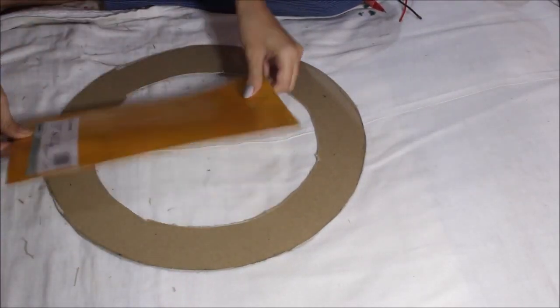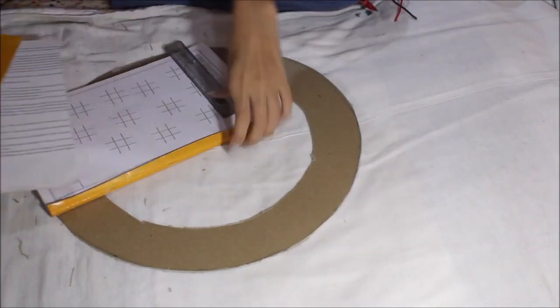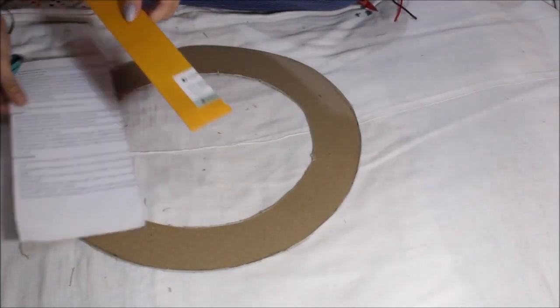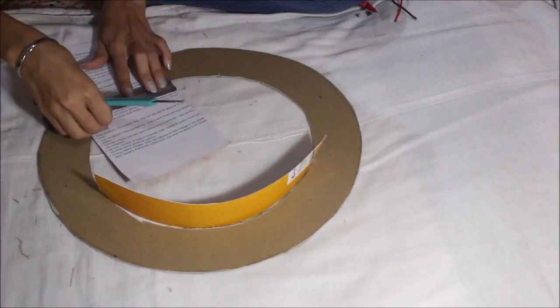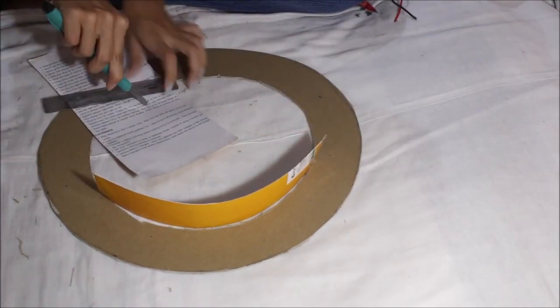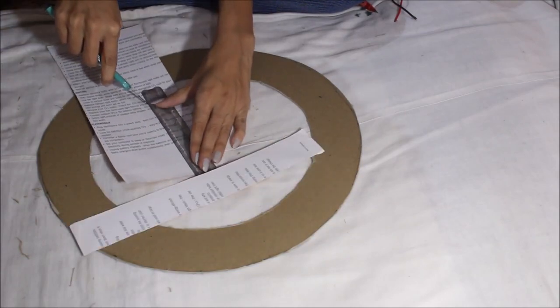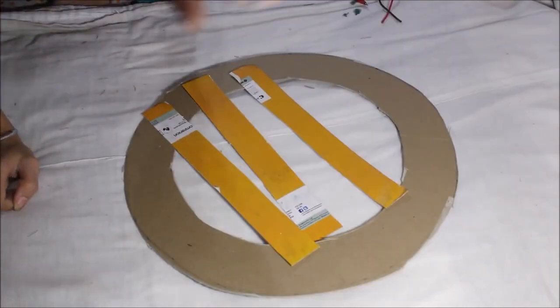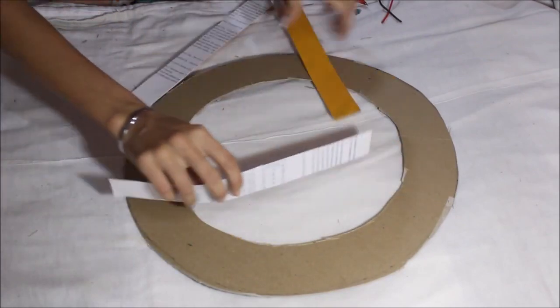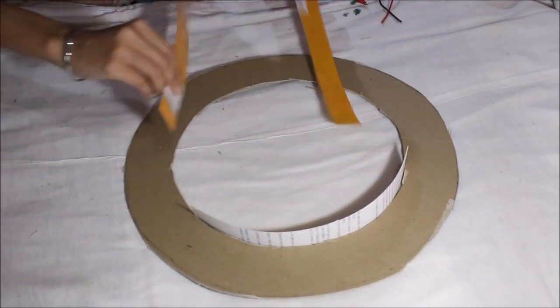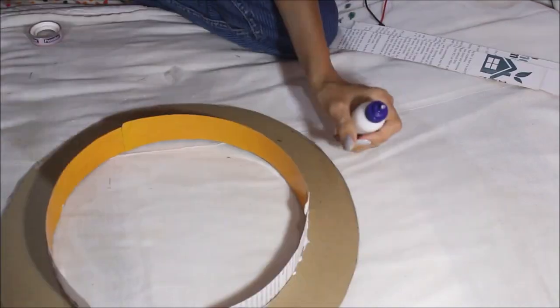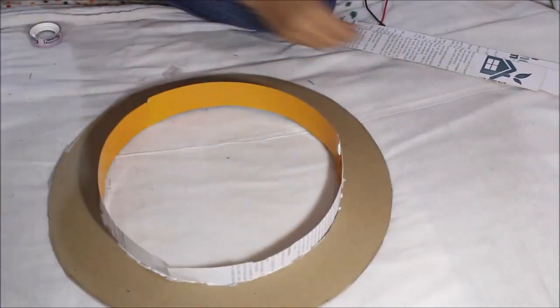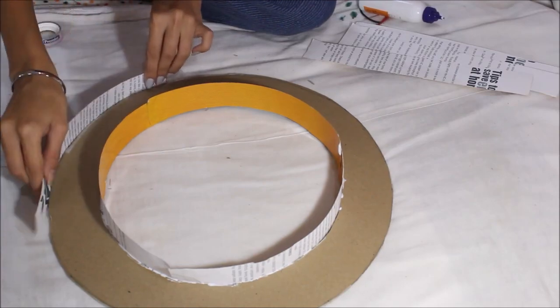And then use it as a boundary for the ring light. So you need to stick it this way, and each strip should be at least five centimeters or more, not less than five centimeters. Then adjust it this way and stick it with the Fevicol. And you need to do the same with the outer corner too.